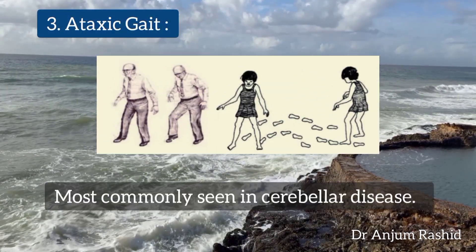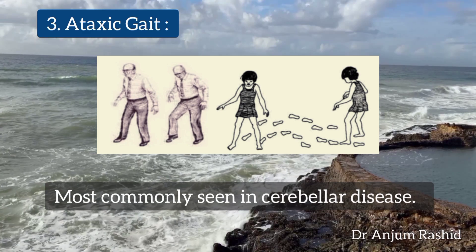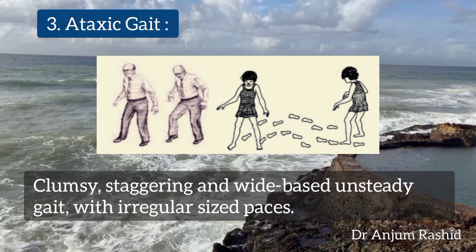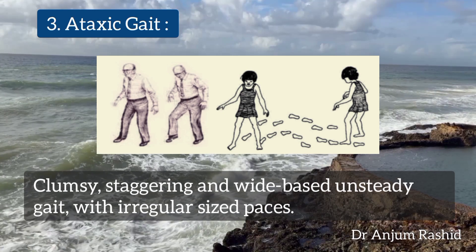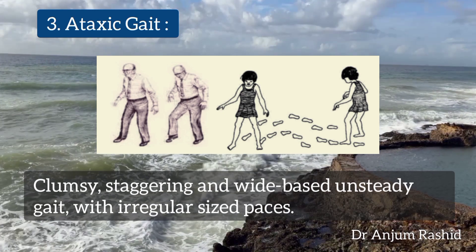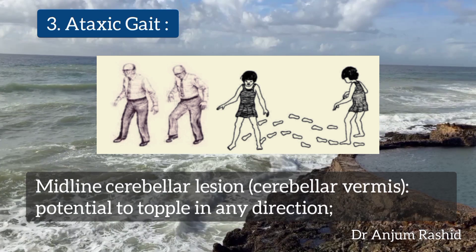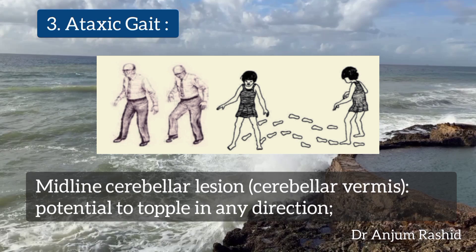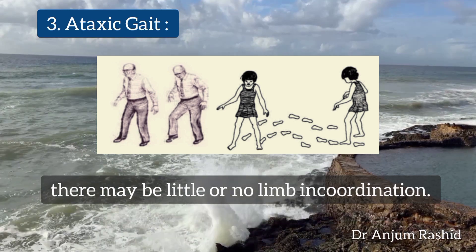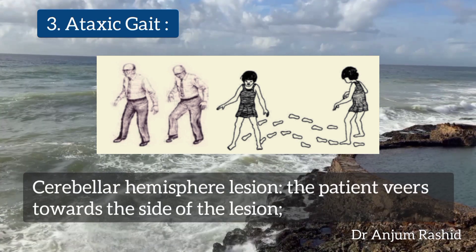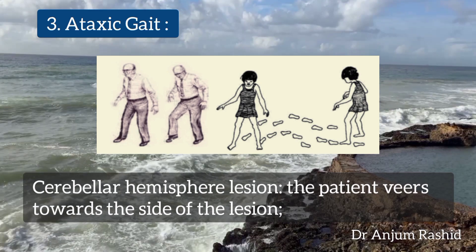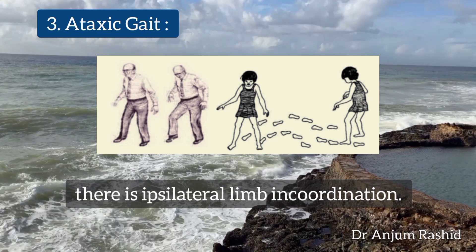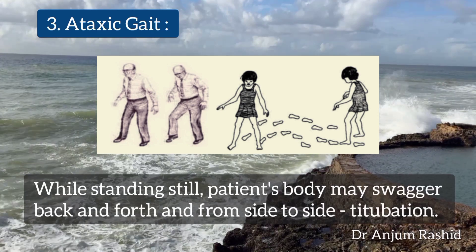The third type is ataxic gait, most commonly seen in cerebellar disease. It is described as clumsy, staggering, wide-based, and unsteady gait with irregular step sizes. In midline cerebellar lesions — involving the cerebellar vermis — there is a tendency to topple in any direction, with little or no limb incoordination. In cerebellar hemisphere lesions, the patient veers toward the side of the lesion with ipsilateral limb incoordination.